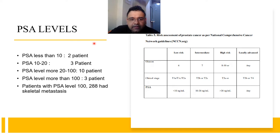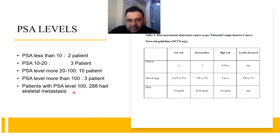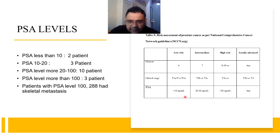PSA levels of patients in the study: PSA less than 10 in 2 patients, PSA 10 to 20 in 3 patients, PSA level more than 20 to 100 in 10 patients, and PSA level more than 100 in 3 patients. Patients with PSA level 100 and above had skeletal metastasis. PSA less than 10 indicated low risk, PSA 10 to 20 intermediate risk, and PSA more than 20 was associated with high risk of prostatic malignancy.